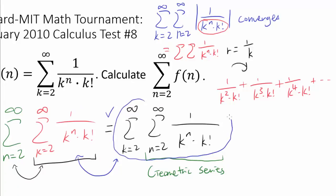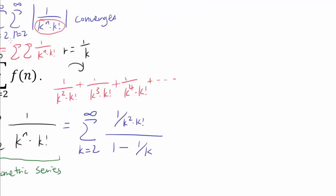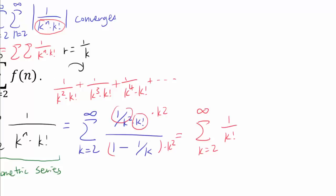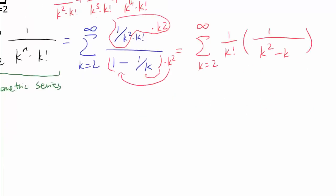Let's find the converging value. We have a summation from k equals 2 to infinity, and inside we have a geometric series with first term 1 over k squared times k factorial, over 1 minus the common ratio 1 over k. Multiplying numerator and denominator by k squared simplifies this to a summation from k equals 2 to infinity of 1 over k factorial times 1 over k squared minus k.